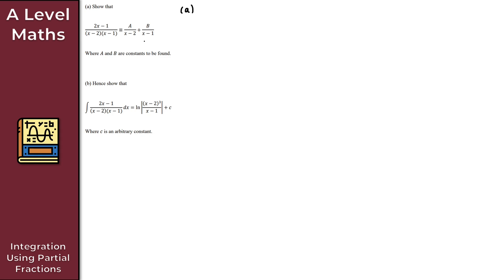To do this, we get the right-hand side over a common denominator. So we get A times (x minus 1) plus B times (x minus 2). The common denominator here is (x minus 2)(x minus 1), which is the exact same as the denominator on the left-hand side. That means the numerator on the right equals the numerator on the left, which is 2x minus 1. We now need to eliminate both A and B using substitution.